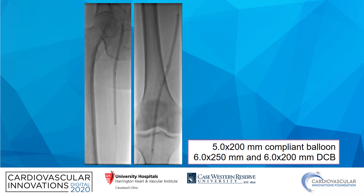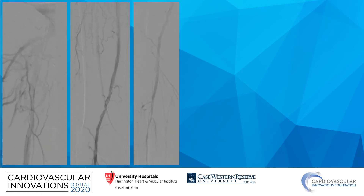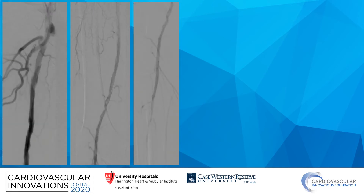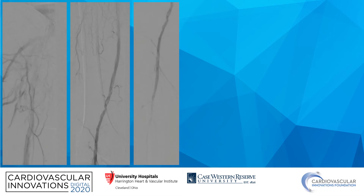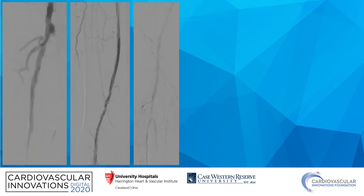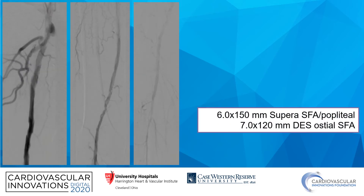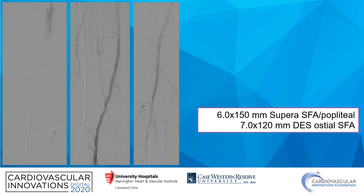We then performed predilation with a 5.0 balloon followed by two drug-coated balloons in the SFA popliteal area. After the drug-coated balloon, you can see there is a dissection plane in the proximal and ostial SFA as well as in the SFA popliteal transition at the area of the prior bypass touchdown. In the P3 segment into the TP trunk, there is still residual disease as well. We ended up placing a Supera stent into the distal SFA into popliteal territory, as well as a drug-eluting stent to cover the ostium of the SFA to maintain patency proximally.